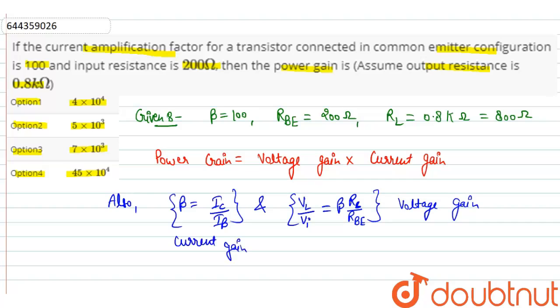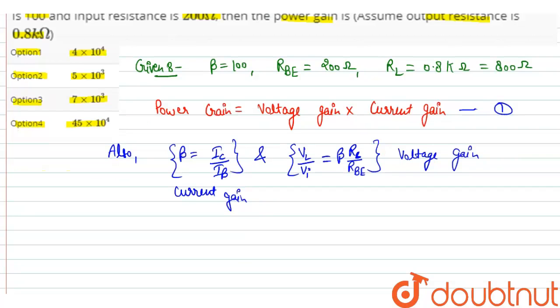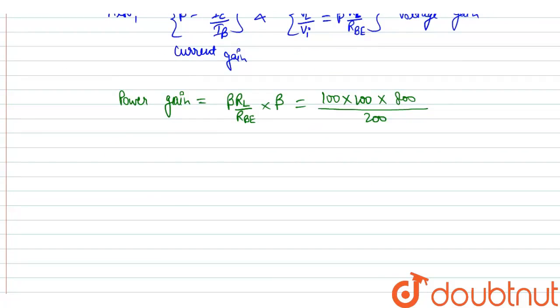Now multiply these two factors and put in this equation. We got power gain is equal to β R_L upon R_BE into β, which gives us 100 × 100 × 800 upon 200. This is equal to 4 × 10³, or we can write it as 4 × 10⁴.